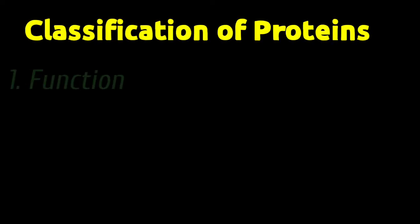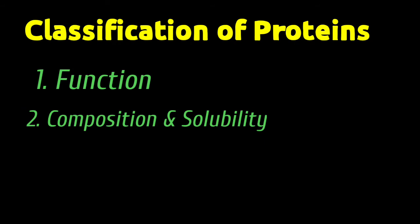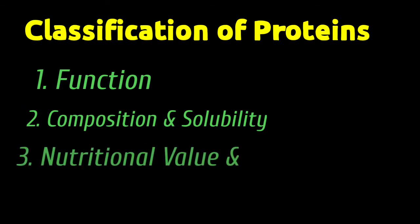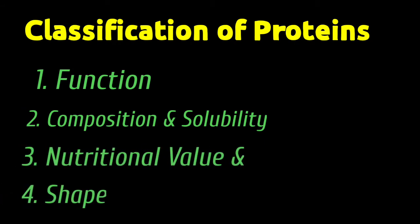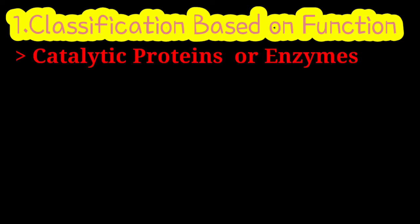Proteins are classified based on their function, composition and solubility, nutritional value, and shape. Coming to classification of proteins based on their function — as we know, proteins perform various functions like catalytic proteins.